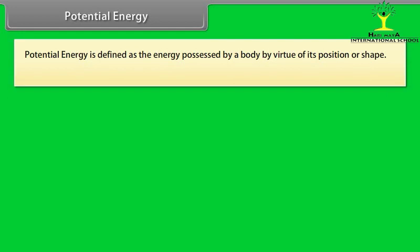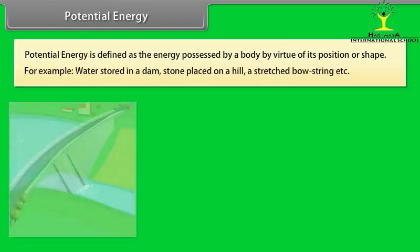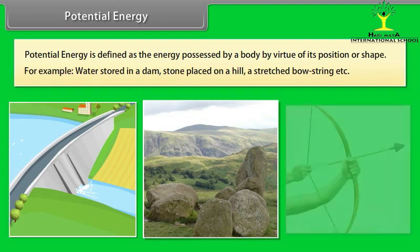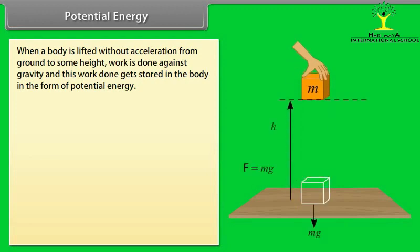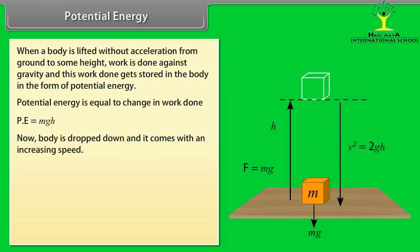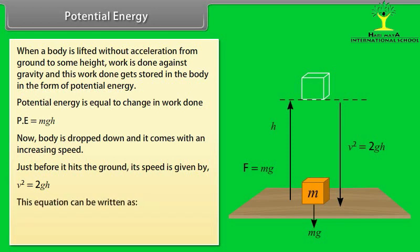Potential Energy. Potential Energy is defined as the energy possessed by a body by virtue of its position or shape. For example, water stored in a dam, stone placed on a hill, a stretched bow string. When a body is lifted without acceleration from ground to some height, work is done against gravity. And this work done gets stored in the body in the form of Potential Energy. Potential Energy equals change in work done. So, Potential Energy equals mgh. Now, body is dropped down and it comes with an increasing speed. Just before it hits the ground, its speed is given by v square equals 2gh. This equation can be written as half mv square equals mgh.